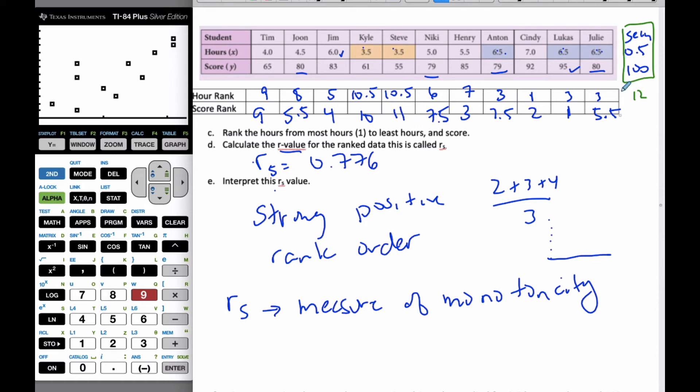But he got the highest score, so he is actually going to be 1. So I am going to have to add 1 to all of these values here. This is 8.5, 4, 8.5, 12, 11, 5, 6.5, and 10.